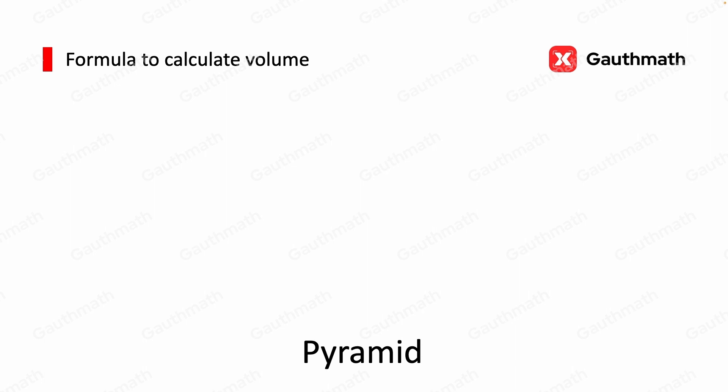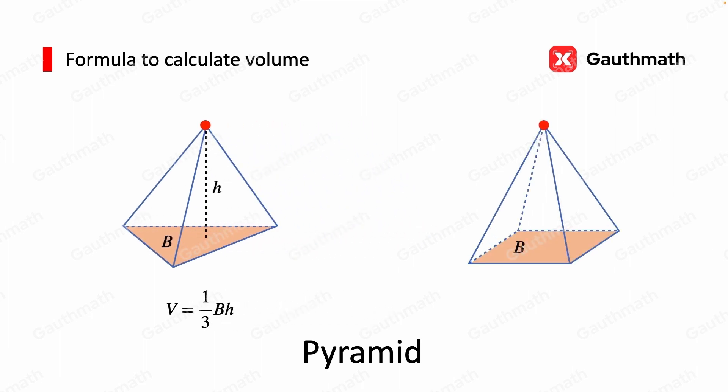A pyramid is a polyhedron formed by connecting a polygonal base and a point, like this. The volume of the pyramid does not matter if the base is a triangle or a square, it's always one-third times base times the height. So for a square base, the volume is still one-third times base times height.